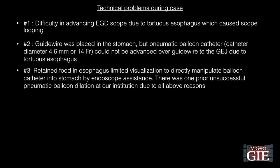There were several technical problems during the case. Number one, there was difficulty in advancing the EGD scope due to a tortuous esophagus, which caused scope looping. Number two, the guide wire could be placed into the stomach, but the pneumatic balloon catheter could not be advanced over the guide wire to the gastroesophageal junction due to the tortuous esophagus. Number three, retained food in the esophagus limited visualization to directly manipulate the balloon catheter into the stomach by endoscope assistance. All the above factors led to one prior unsuccessful pneumatic balloon dilation at our institution.